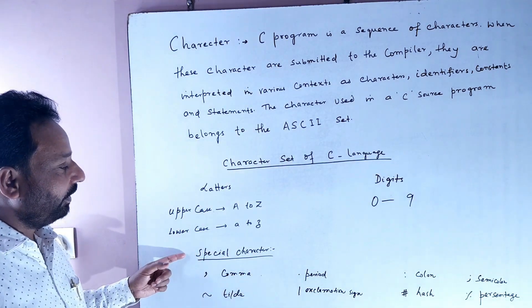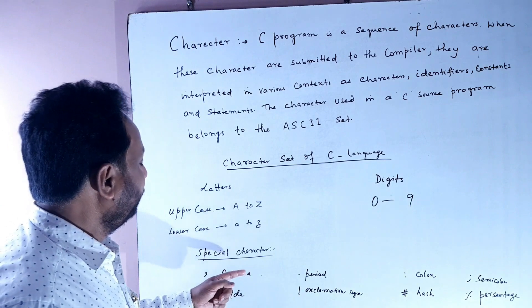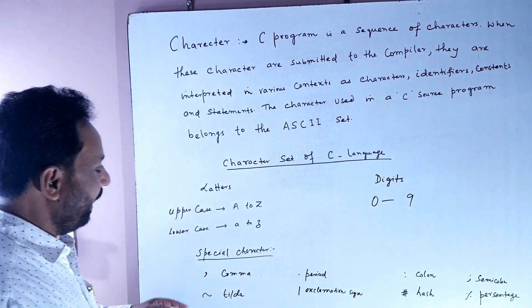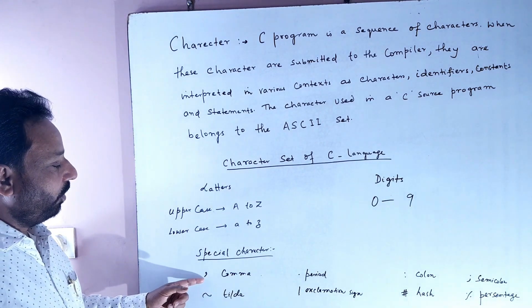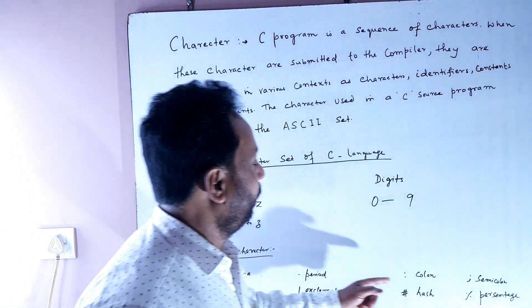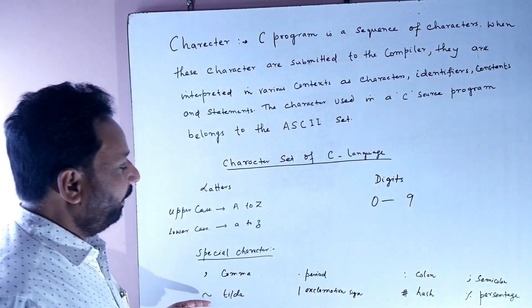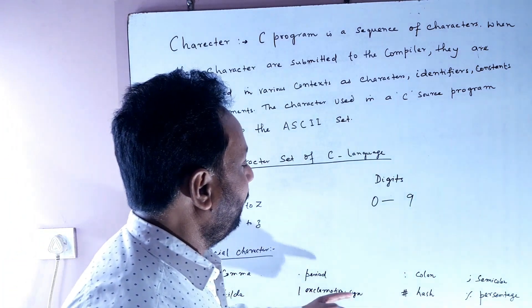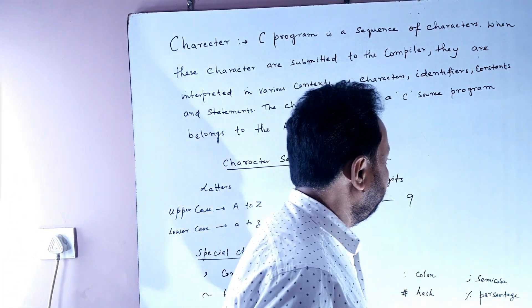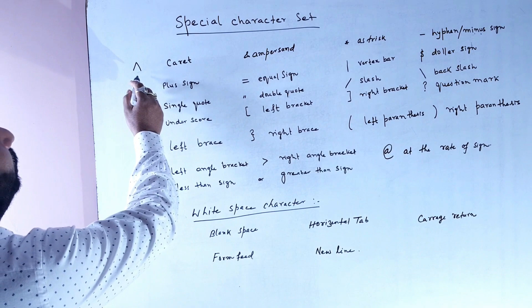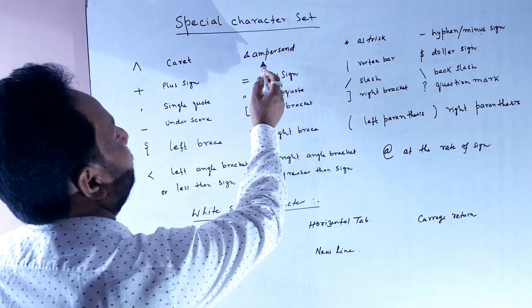Special characters used in C programming language include comma, period, colon, semicolon, tilde, exclamation sign, hash, percentage, caret, and percent sign.